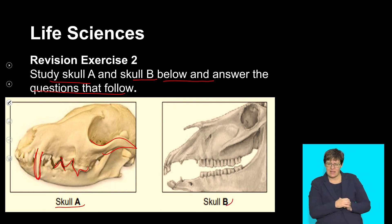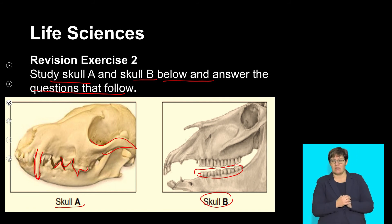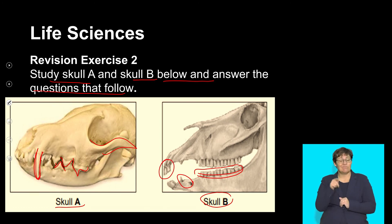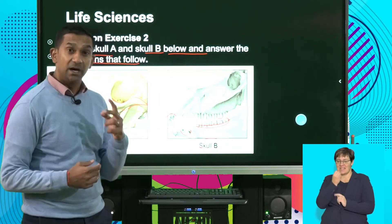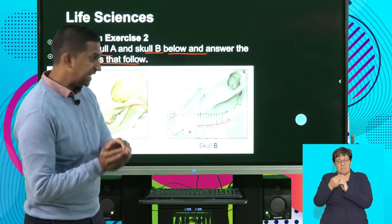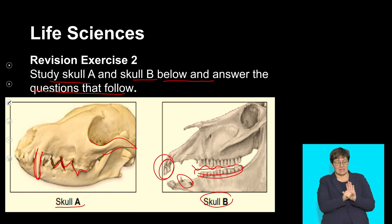Looking at skull B, you can see a well-developed and significantly elongated jaw showing the presence of flattened molars and premolars. We see the absence of canines but significantly well-developed incisors. This would be significant in an organism that is a herbivore — one that consumes plant material. The incisors help them to bite off leaves and grass, while the well-developed molars and premolars are for chewing and grinding plant material. That's essentially what you should identify when comparing skulls of different consumers.